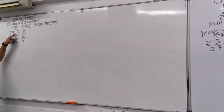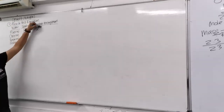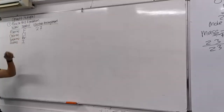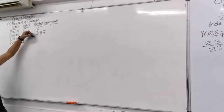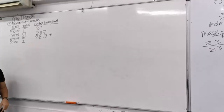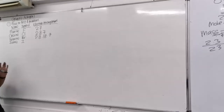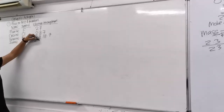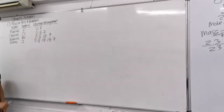Now for electron arrangements. Fluorine is 2, 7 — since it's in Group 17 it needs 7 outer electrons. Chlorine adds one more shell: 2, 8, 7. Bromine adds another level: 2, 8, 18, 7. You might notice the odd number 18 — you don't need to know why it's 18 for SPM; it's something taught in Form 6 and A-level, very complicated. Iodine adds one more circle: 2, 8, 18, 18, 7. Focus on how to write the electron arrangement correctly.